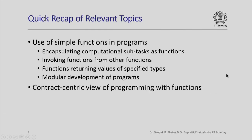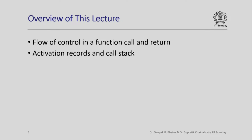Hello and welcome. In this lecture we are going to look at the flow of control in a program with function calls. Here is a quick recap of some of the relevant topics we have already studied. We have seen the use of simple functions in programs, how one function can be invoked from another, and that functions mostly return values of specified types. In this lecture we are going to see in great detail how control flows when a function is called and when a function call returns, and we will see that this flow of control is implemented through activation records and call stack.